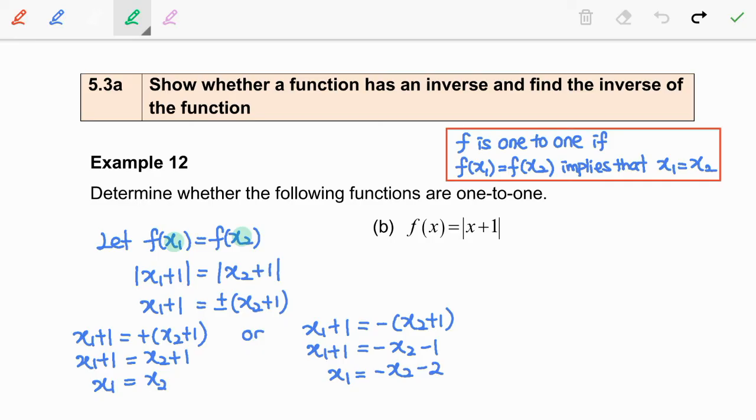So here, we clearly see that there are two possible values of x1. So this means the function f is not a one-to-one function.